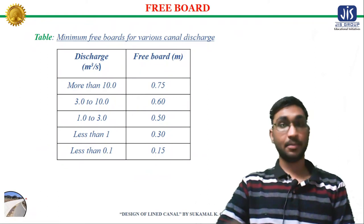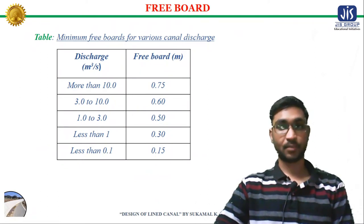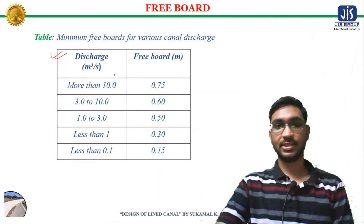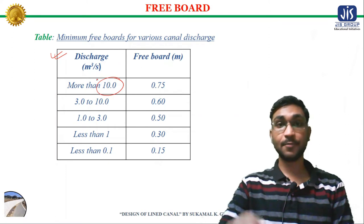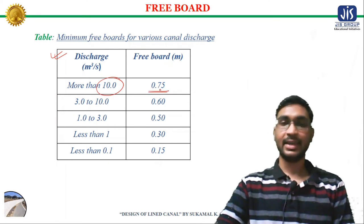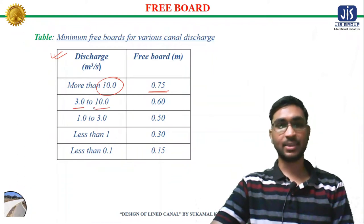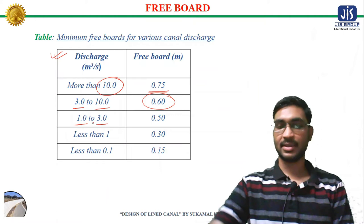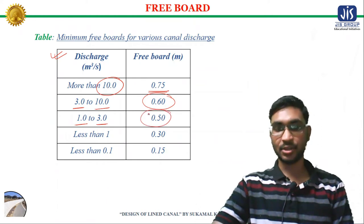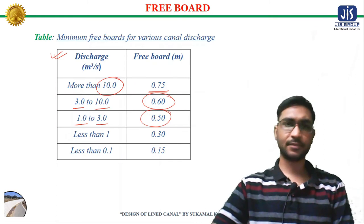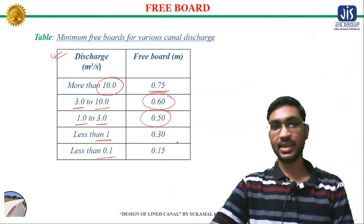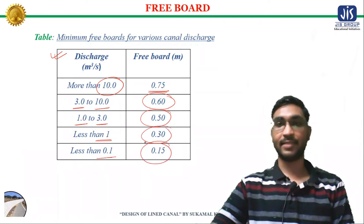The freeboard shall be measured from the full supply level to the top of the lining. Minimum freeboard for different canal discharges: more than 10 cumecs — 0.75 m; between 3 to 10 cumecs — 0.60 m; between 1 to 3 cumecs — 0.50 m; less than 1 cumec — 0.30 m; and less than 0.1 cumec — 0.15 m.